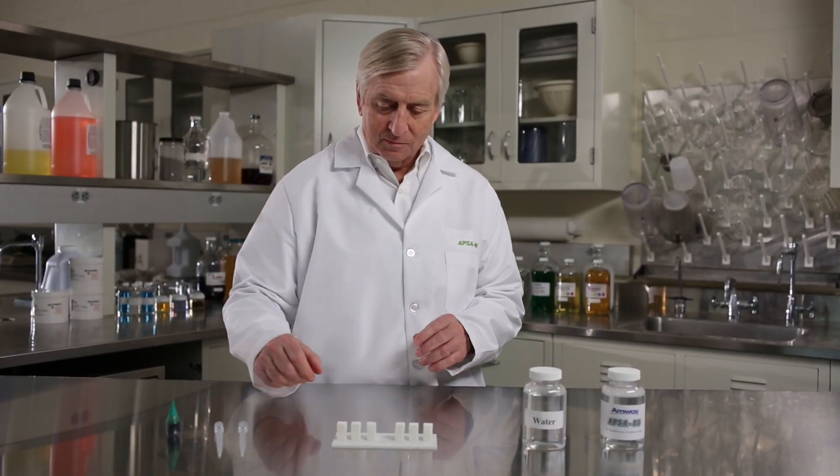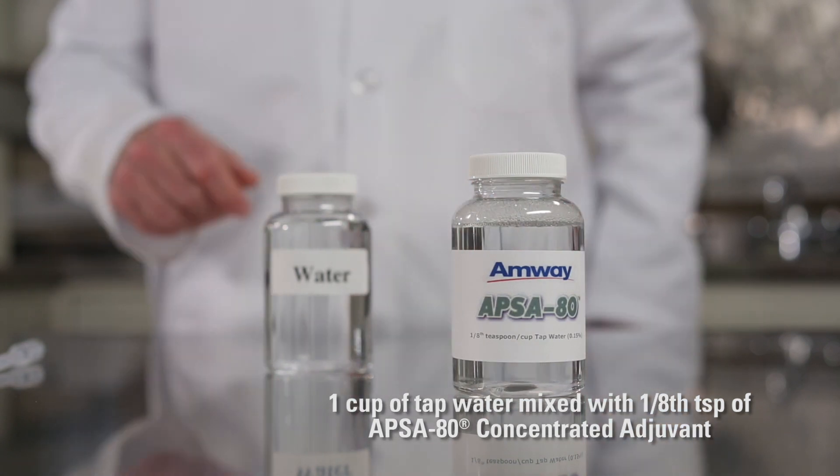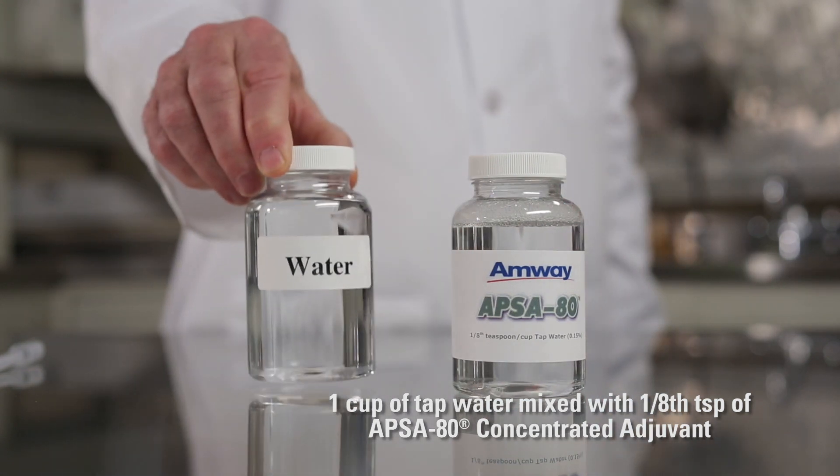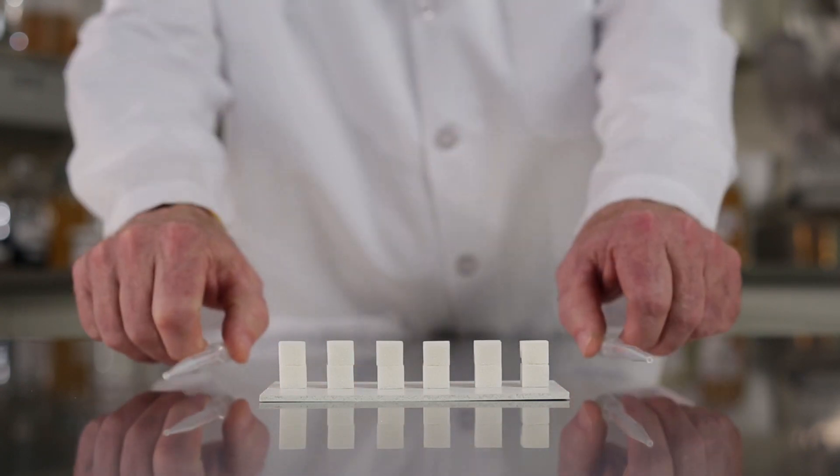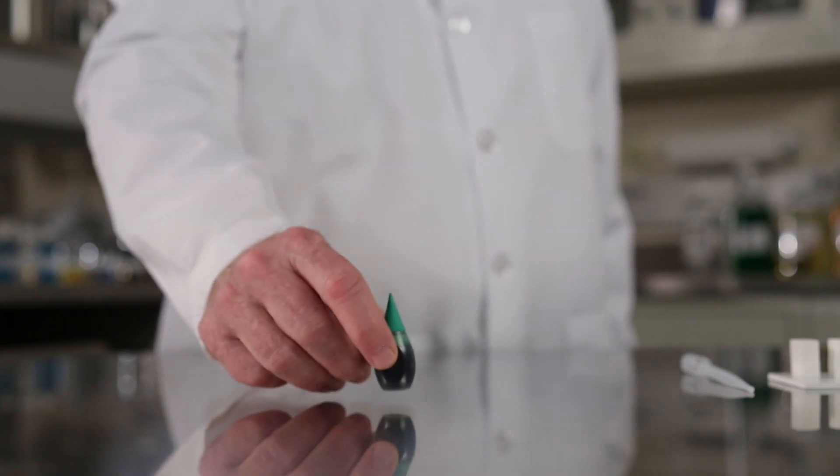For this demonstration you'll need the following: one cup of APSA 80 solution, one cup of standard tap water, 12 sugar cubes, two pipettes or droppers, and green food coloring.